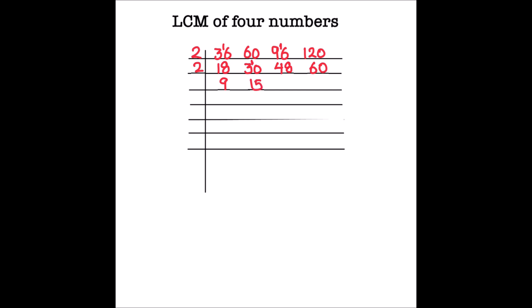We can use 2 to divide again: 24 ÷ 2 = 12 and 30 ÷ 2 = 15. However, 9 and 15 are odd numbers and are not fully divisible by 2, so we leave those as is. So we have 9, 12, 15, and 15 after this step.